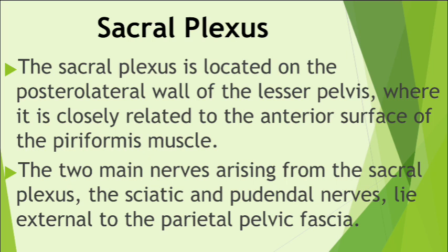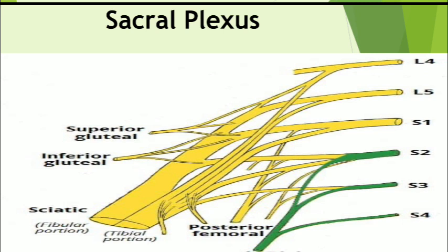The inferior gluteal nerve arises from the anterior rami of spinal nerves L5 to S2 — the fifth lumbar and the first and second sacral spinal nerves. It leaves the pelvis through the greater sciatic foramen, inferior to the piriformis and superficial to the sciatic nerve. It accompanies the inferior gluteal artery and breaks up into several branches that supply the overlying gluteus maximus muscle.